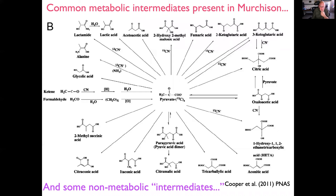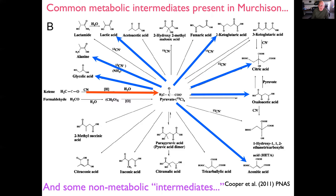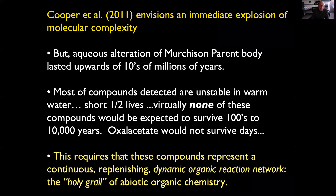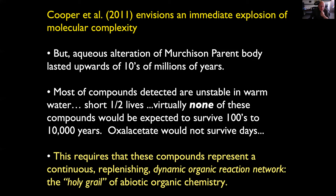George Cooper published in 2011 a beautiful study identifying common metabolic intermediates in extracts from the Murchison meteorite, all envisioned to come through a common precursor — pyruvate — including classic TCA cycle intermediates. However, aqueous alteration of the Murchison parent body lasted tens of millions of years, and most detected compounds are unstable in warm water with very short half-lives; oxaloacetate wouldn't survive a day. This requires that these compounds represent a continuous and replenishing dynamic organic reaction network — the holy grail of abiotic organic chemistry.